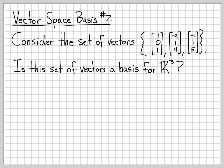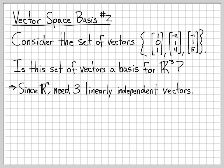Since R³ has three dimensions, we know that we need three linearly independent vectors if we're going to form a basis for R³. So really, this question boils down to finding out if the three vectors that are provided are linearly independent or not.